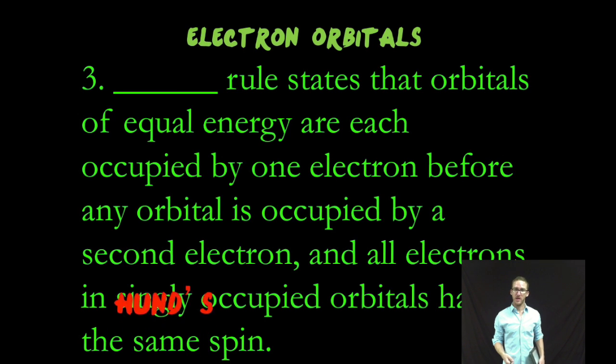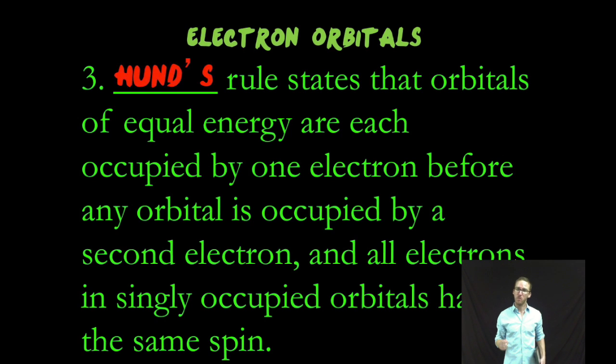And the third rule you need to be aware of is Hund's rule. It states that orbitals of equal energy are each occupied by one electron before any orbital is occupied by a second electron, and all electrons in singly occupied orbitals have the same spin. Now, that rule seems intense, but I'm going to use my amazing art skills to make it easy for you to understand what Hund's rule is all about.